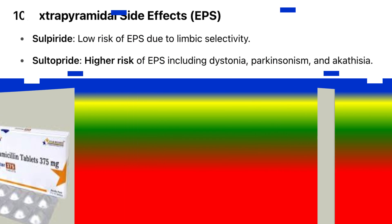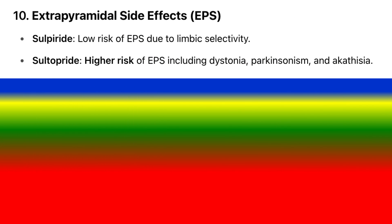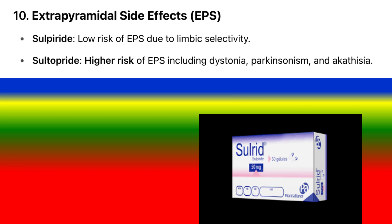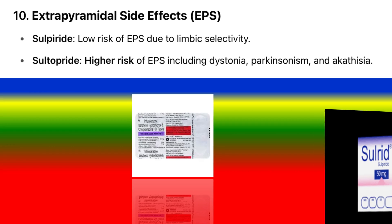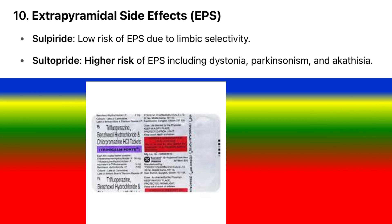10. Extrapyramidal side effects (EPS): Sulpiride has a low risk of EPS due to limbic selectivity. Sultopride carries a higher risk of EPS, including dystonia, Parkinsonism, and akathisia.